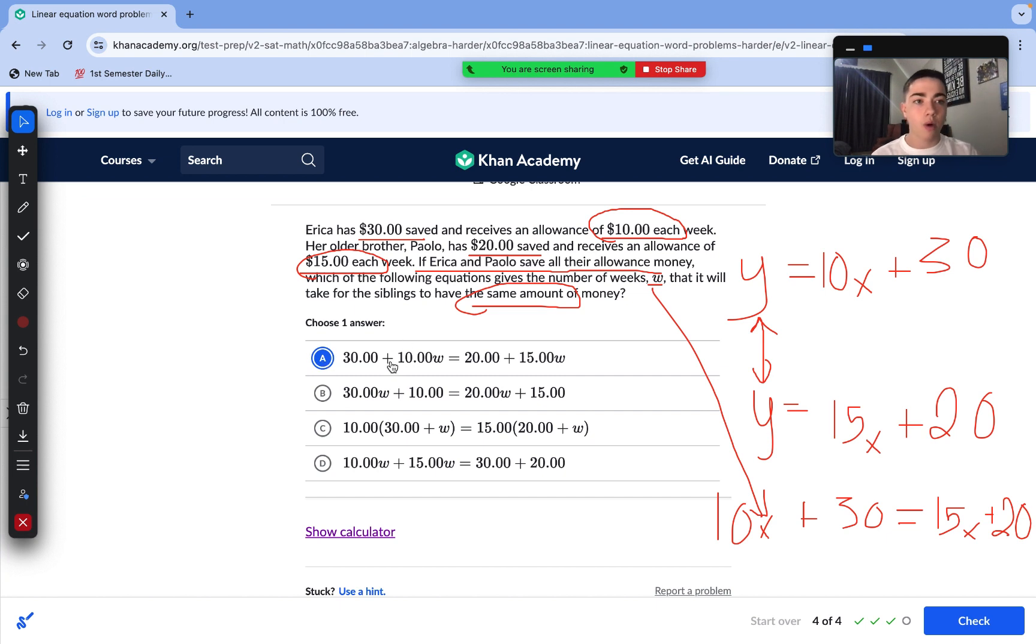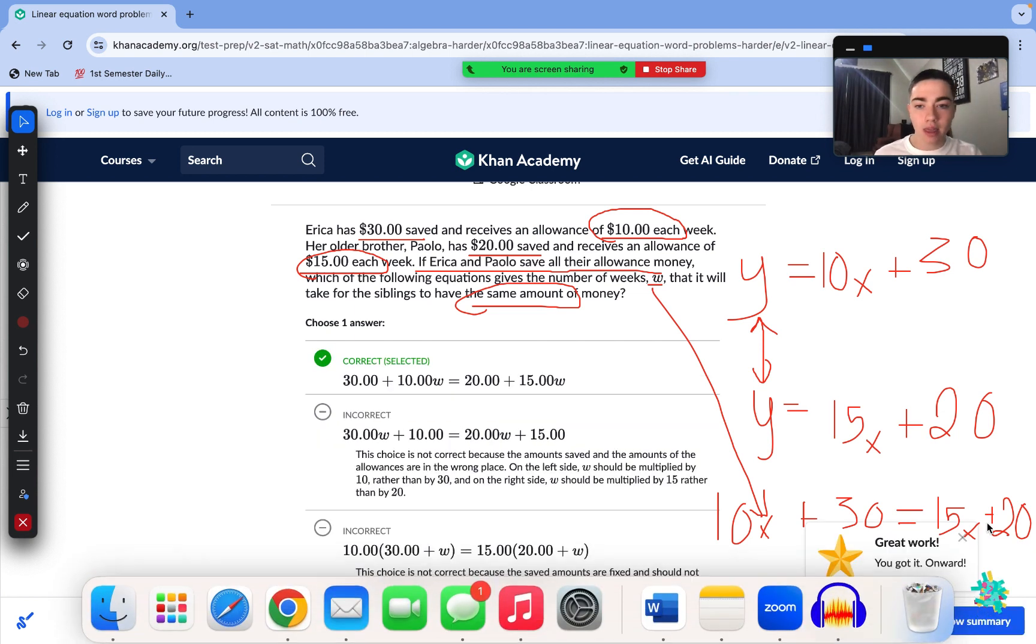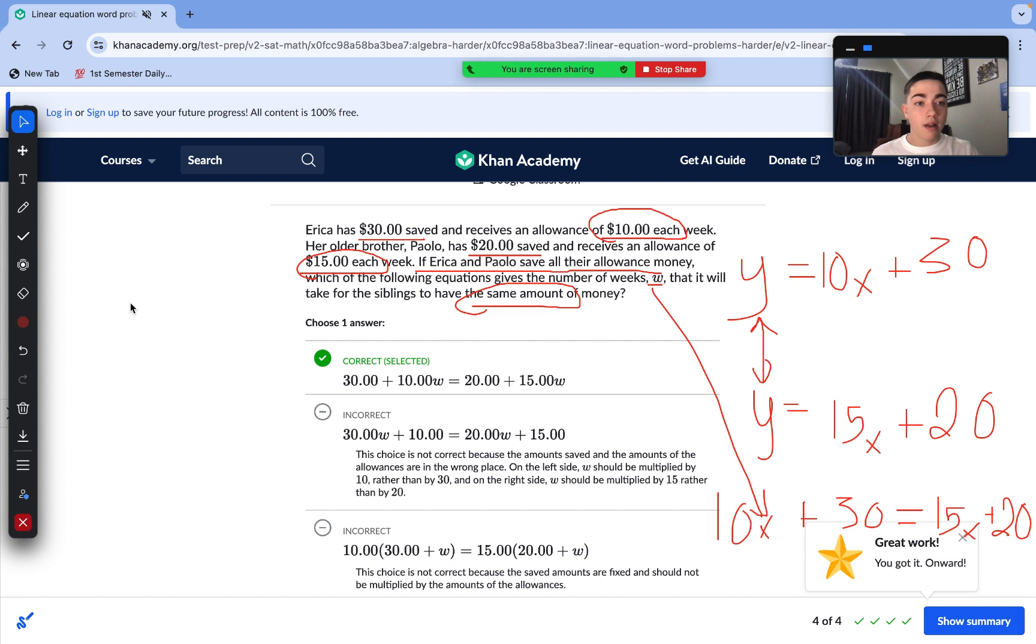We can see Erica's equation on the left and then Paolo's equation on the right and being set equal to each other. That's all we had to do here. We get the answer correct, of course. So, that is all for today.